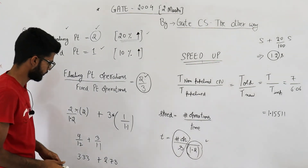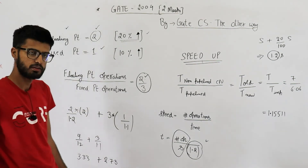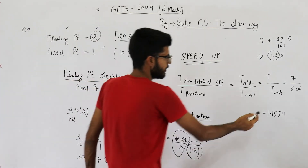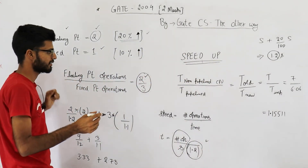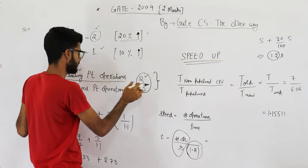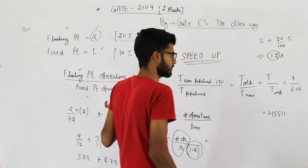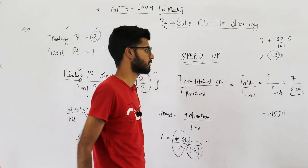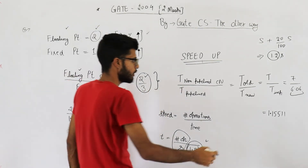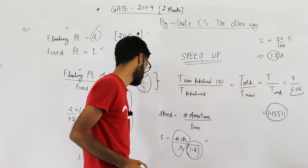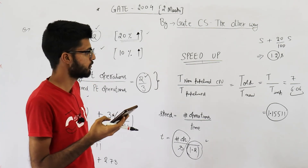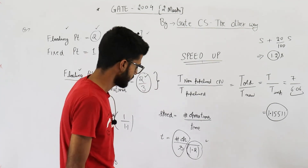Solving this: 4 divided by 1.2 is approximately 3.33, and 3 divided by 1.1 is approximately 2.73. Adding these gives T_new equals 6.06. The time taken by the new scheme is 6.06 time units, compared to 7 in the old scheme. Speed-up equals 7 divided by 6.06, which comes out to approximately 1.155. Looking at the options, that's option A — 1.155. We have got the exact answer.